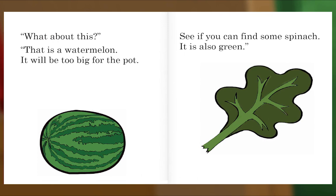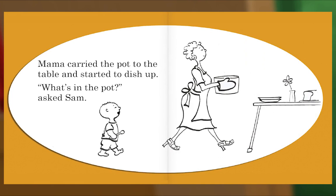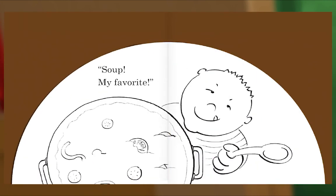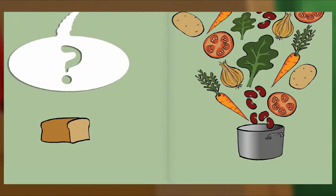'What about this?' 'That is a watermelon, it will be too big for the pot. See if you can find some spinach, it is also green.' 'Please get some bread.' 'No, it won't go into the pot. It will go on the table.' Mama carried the pot to the table and started to dish up. 'What's in the pot?' asked Sam. Soup! My favorite! The End.